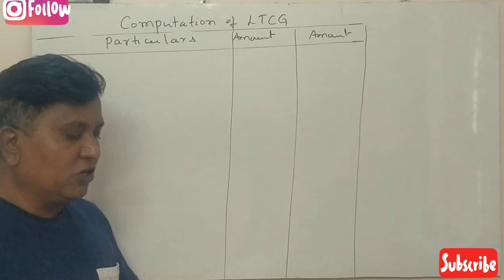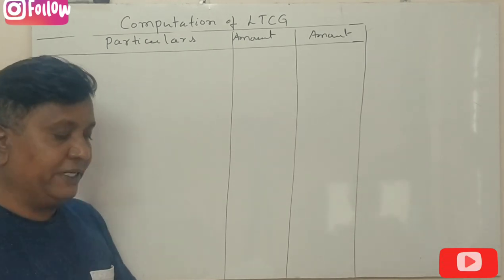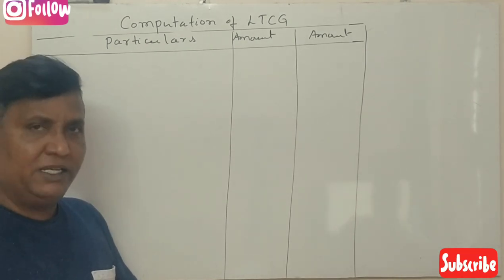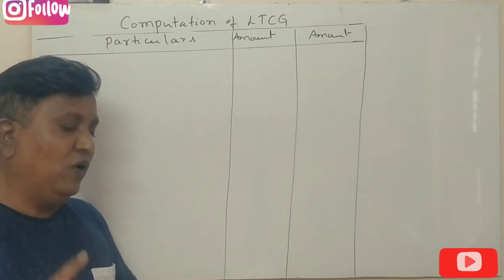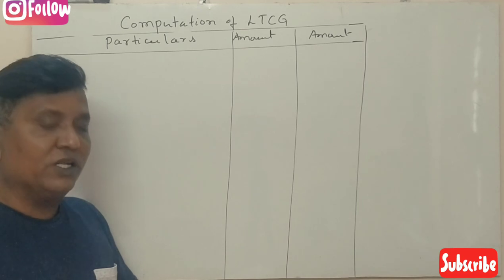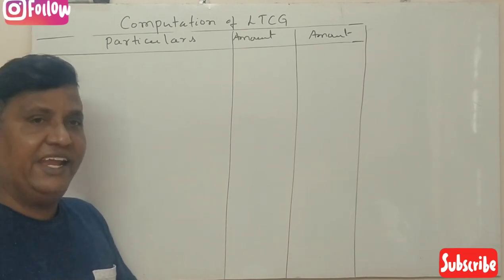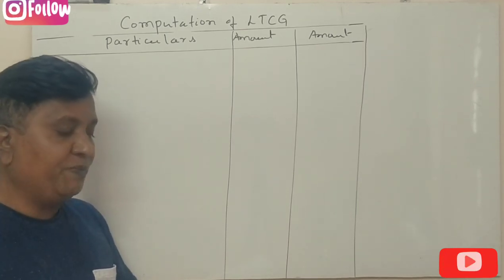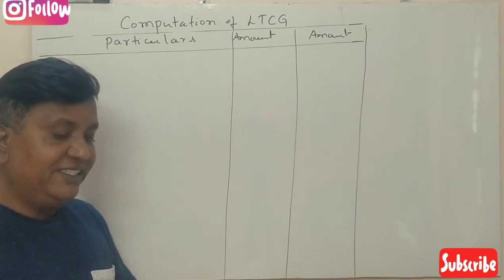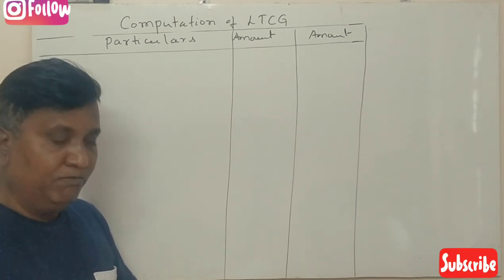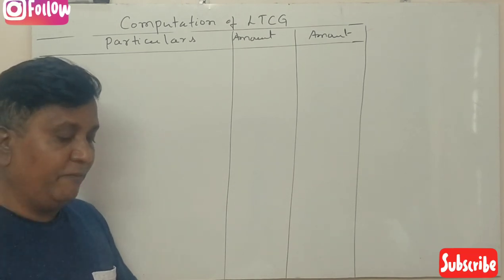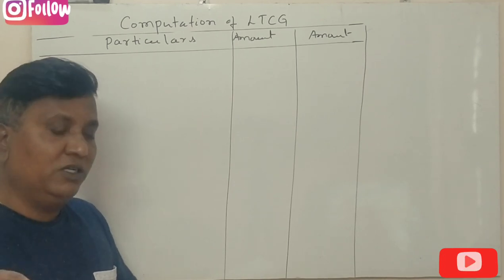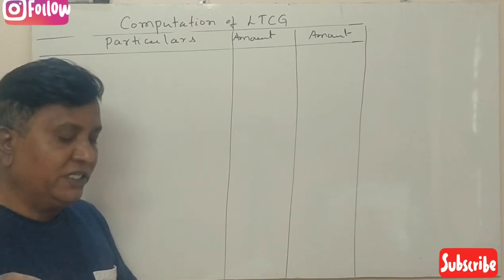Shree Ragunandan was the owner of two house properties, both used for residential purposes at Bangalore. One residential house property was sold on 28 February 2020 for Rs. 20 lakhs. This house was purchased by him on 1st January 1998 for Rs. 15,000. He had made some additions to this house by spending Rs. 3,000 on 20 March 1999.